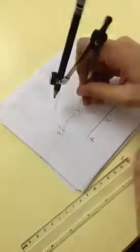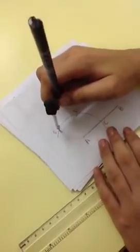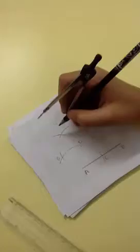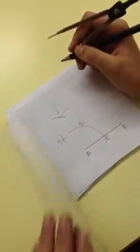We'll make an arc with the point of our rounder on D and without changing the radius we'll make another arc from E. These both arcs should intersect. This point of intersection can be called as F. Now we'll join F and A.